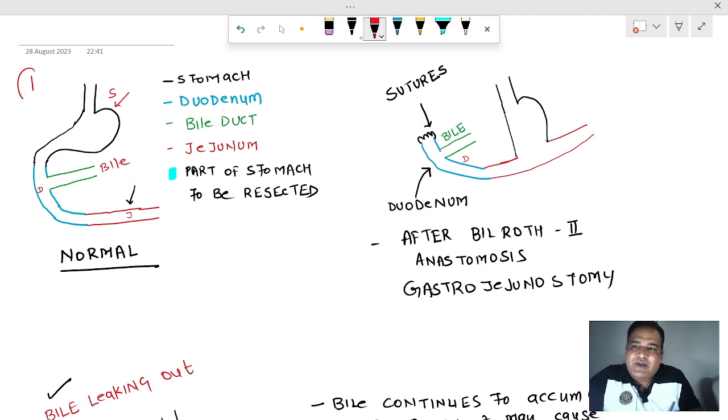Just have a look at image number one. That's normal image, normal anatomy. You see, the black color shaded part is stomach. The green colored shaded part is bile duct. The bile duct opens in the second part of duodenum, which is retroperitoneal. The blue colored thing which I have shaded is duodenum, and the red colored thing is jejunum.